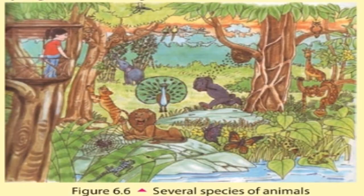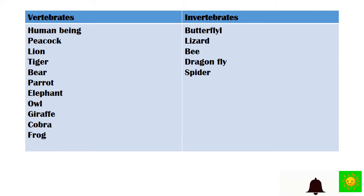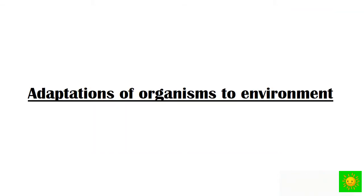I have given you a picture of a forest drawn by a student. Identify the organisms in the picture and classify the animals as vertebrates and invertebrates. Vertebrates are: human, peacock, lion, tiger, bear, parrot, elephant, owl, giraffe, cobra, and frog. Invertebrates are: butterfly, lizard, bee, dragonfly, and spider. Let's move to our second subtopic: adaptation of organisms to the environment.